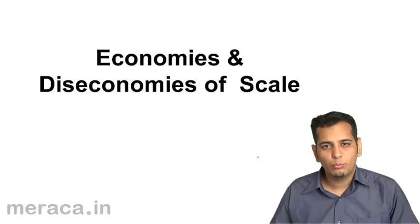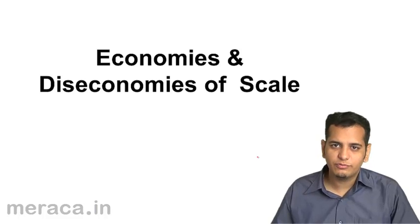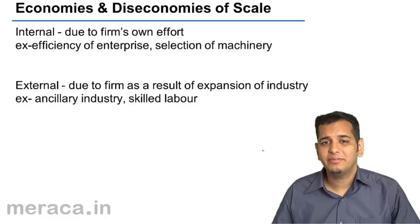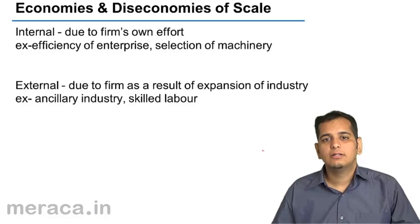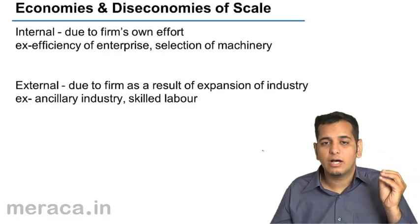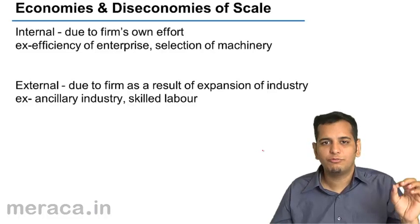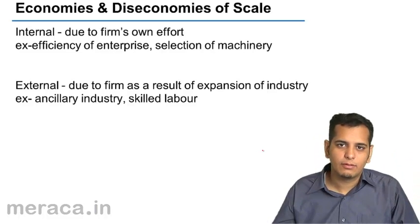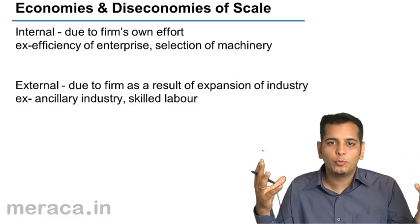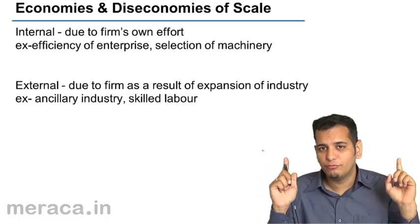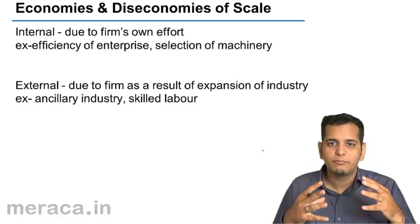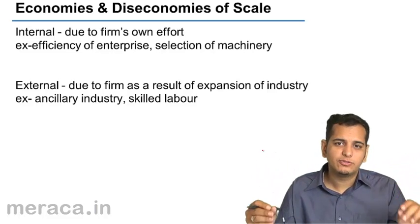In this segment, we study what are the economies and dis-economies of scale. Economies means where the firm, because of its increasing scale, is accruing benefits in terms of reduction in cost of production per unit. When the firm expands and produces more and more units, the cost of production of one unit goes down, and it keeps on going down as production is increased. This is called economies of scale.